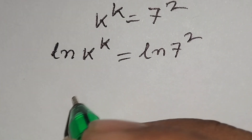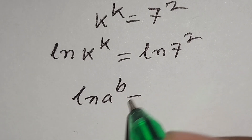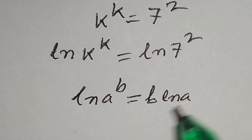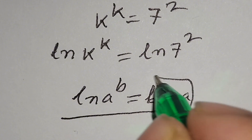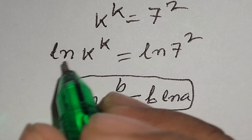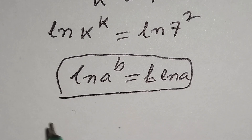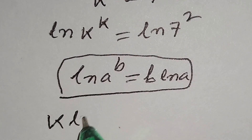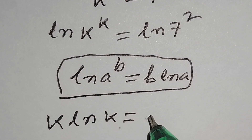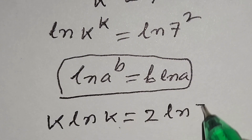We know that ln of a to the power b is equal to b times ln a. According to this formula, we can write this line as: k times ln k is equal to 2 times ln 7.